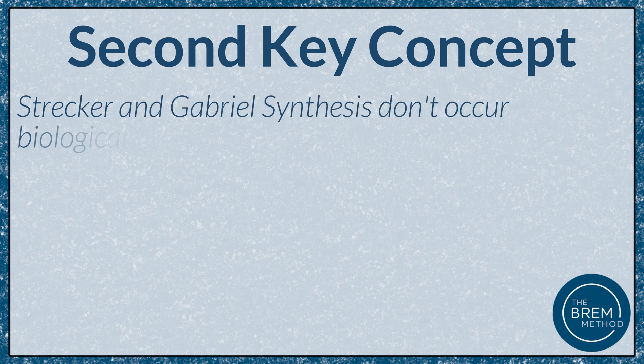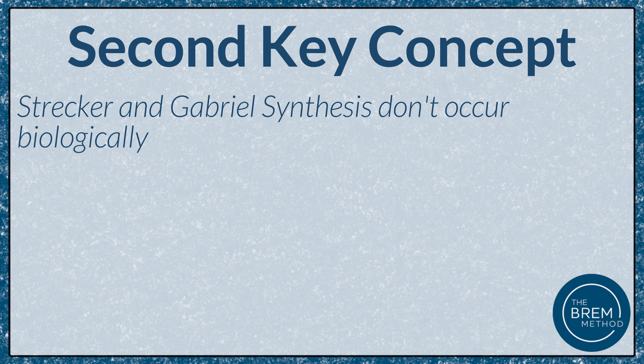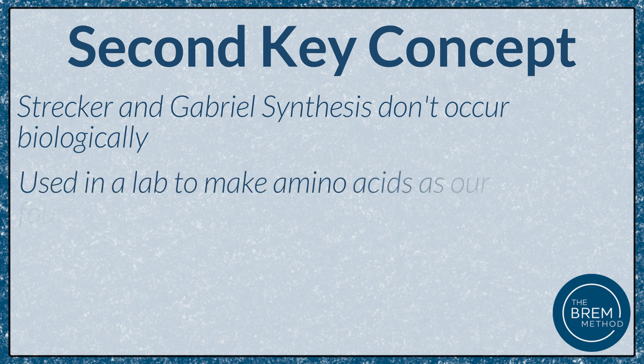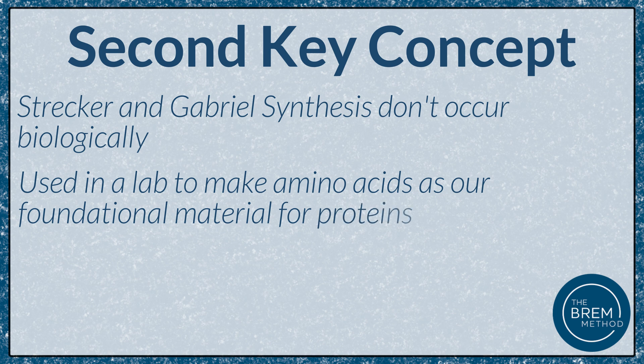Another interesting point about these reactions is they don't actually occur biologically. We're not seeing Strecker synthesis and Gabriel synthesis in our cells. Instead, we use them in a lab to make amino acids as our foundational material for proteins. As humans, we have to consume our amino acids through our diet — that's why they're called the 20 essential amino acids — and we can manipulate and change those amino acids through keto acid reactions and metabolism, but we really can't make them from scratch like we can in a lab with Strecker and Gabriel synthesis.